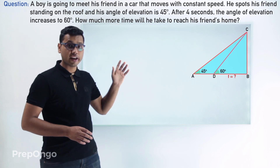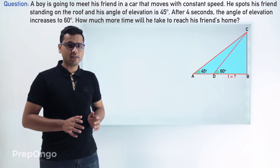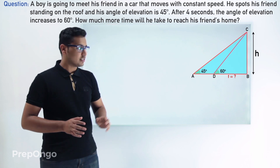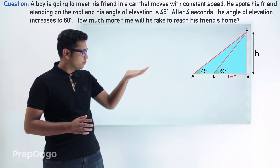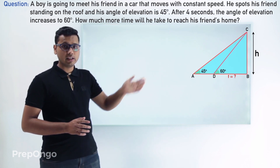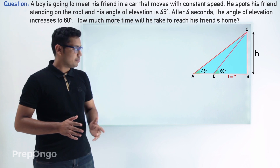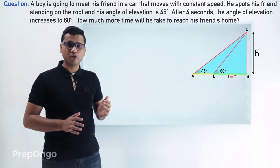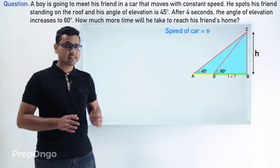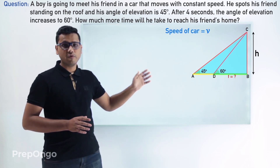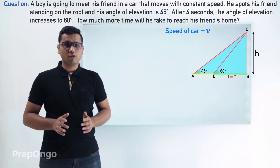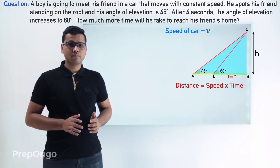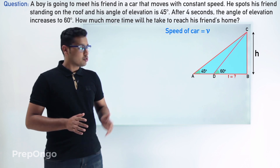Both these triangles have a common height — let's call it H. If we can express this height in terms of the base of both triangle ABC and triangle DBC, we can find a relation between distance AD and distance DB. Since the car is moving with constant speed V, we can find the relation between distances using: distance equals speed multiplied by time.